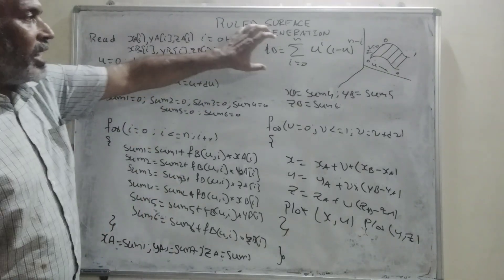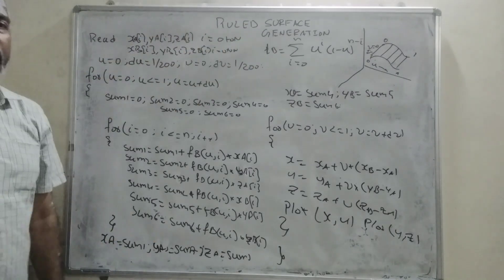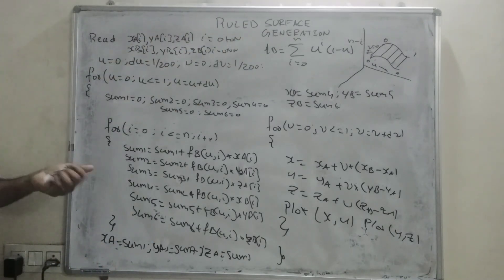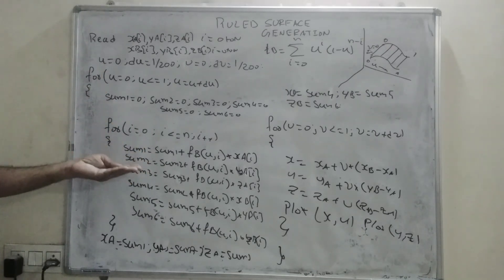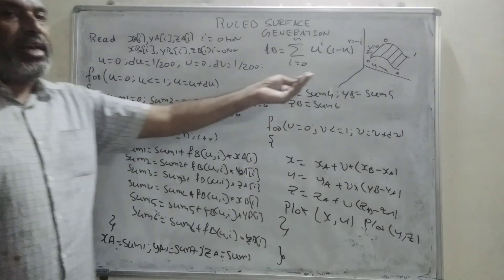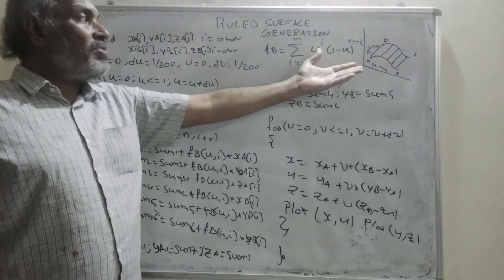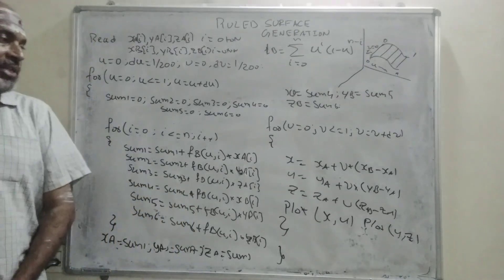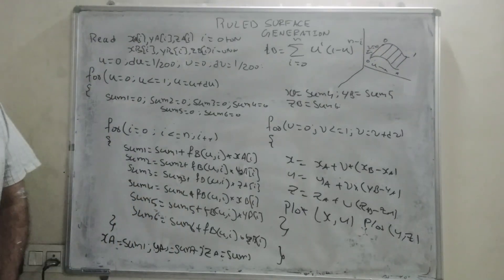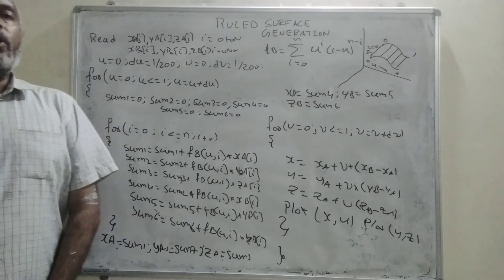For this, again, you have to write a separate function and this function, I will kind of do it here in Bezier class. This is what is a program, which is simply within five or ten minutes, you can write this program and generate a beautiful ruled surface generation. This is what I would like to just present in this particular lecture session. Thank you for watching everything.